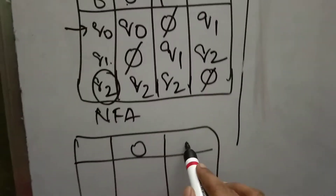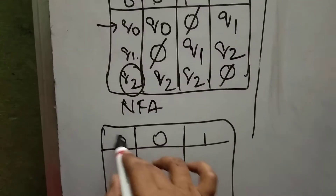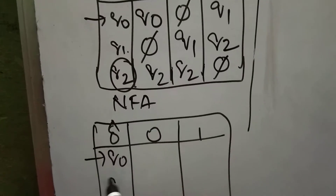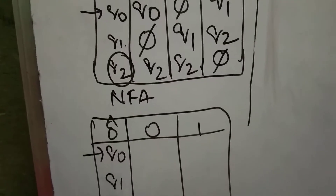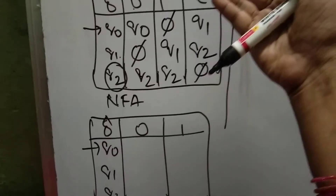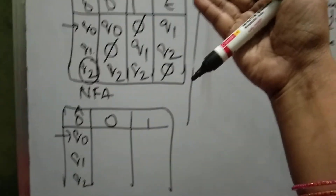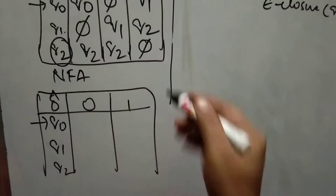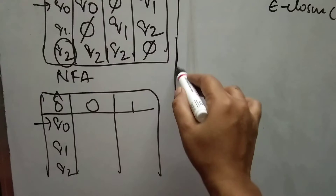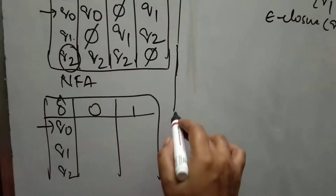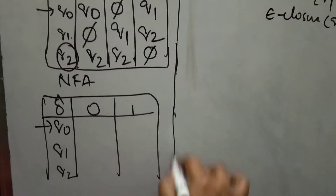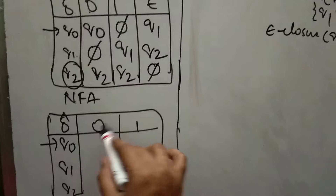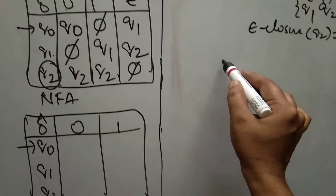Now you can convert this into an NFA table. We have only inputs 0 and 1 using the delta-cap function. The same states Q0, Q1, Q2 will be available here also. Now let us see how to calculate — first we have to calculate Q0 upon 0.